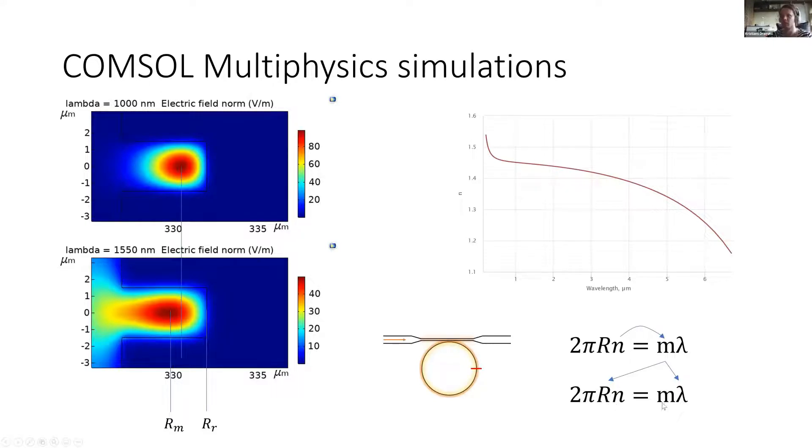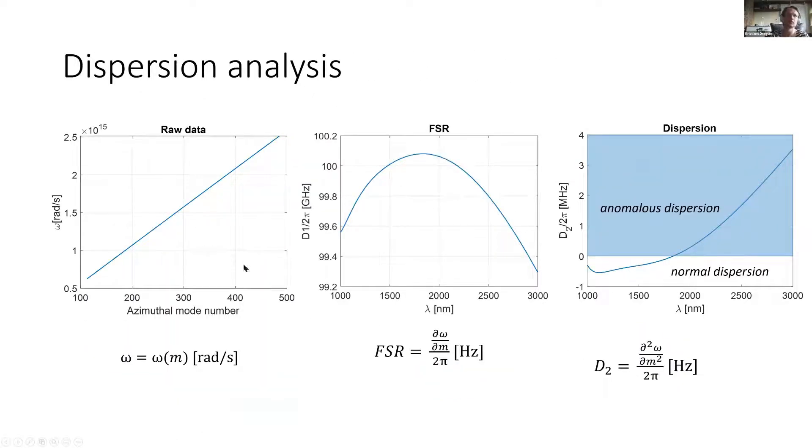When we have made our simulations and found the wavelengths of the resonant modes, we can take the relationship from wavelengths to azimuthal mode number and calculate the dispersion. The first derivative will be free spectral range, which is the distance from two modes, and the second derivative is the dispersion.